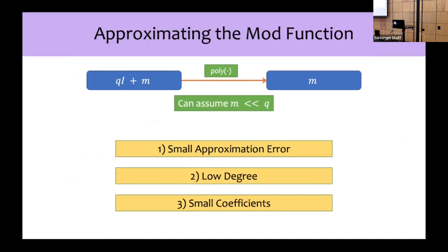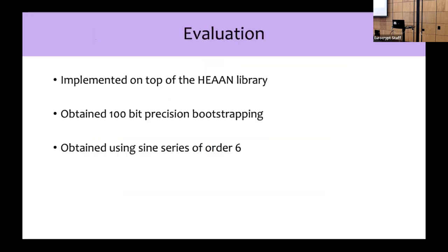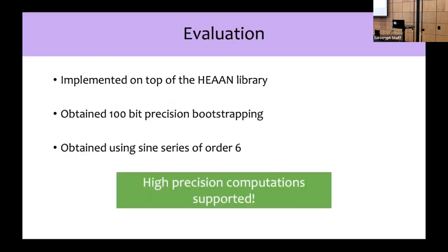To summarize: we wanted to approximate the mod function by a polynomial with simultaneously small approximation error — achieved by adding additional sine terms to get arbitrarily small error — low polynomial degree, and small coefficients, since both the sine series coefficients and the Taylor series coefficients of sin(kx) are small. To evaluate our sine series approximation of the mod function in practice, we implemented this on top of the Heaan library and achieved 100-bit precision bootstrapping using a sine series of order six, supporting high-precision computation.